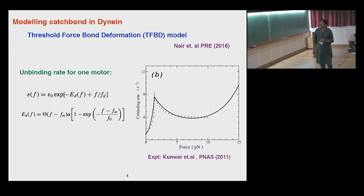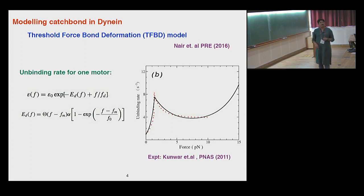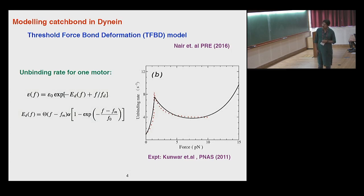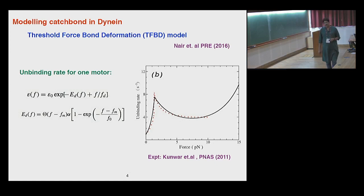We tried to quantify this qualitative picture in a phenomenological model called the threshold force bond deformation model. We took the data from the experiments of Gross et al. and tried to fit it. The basic idea is that there is a threshold force after which the catch bond is activated, followed by a regime of decay of the binding rate, where one associates a bond deformation energy with the catch bond. The parameters characterizing catch bond strength are alpha and f-naught, and this shows the rough comparison of the fitted data.